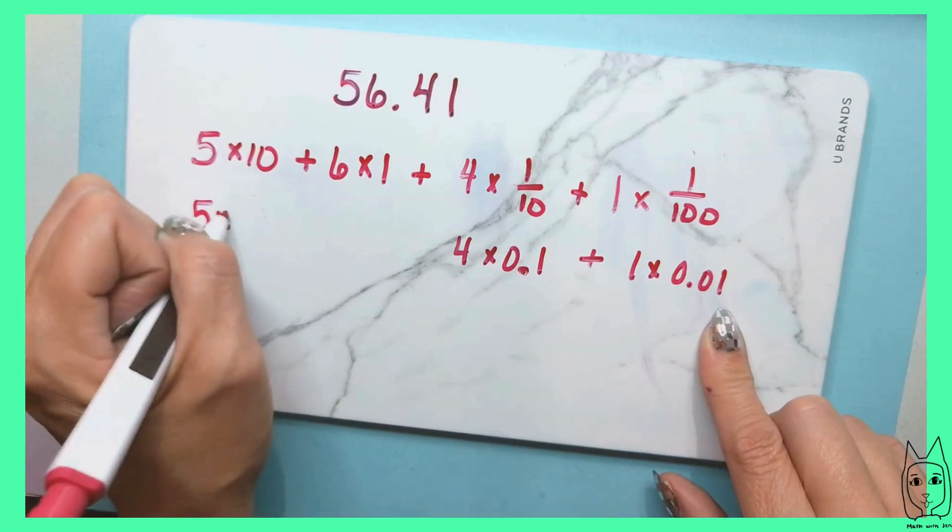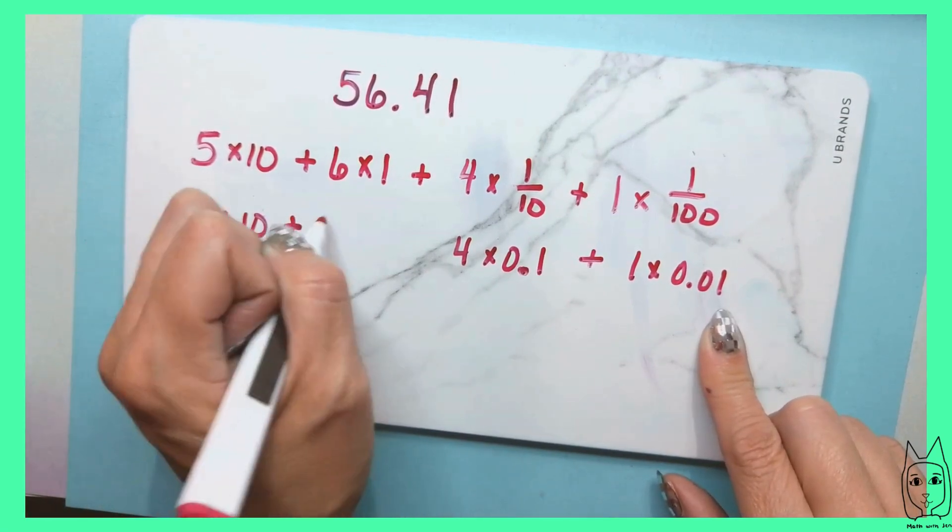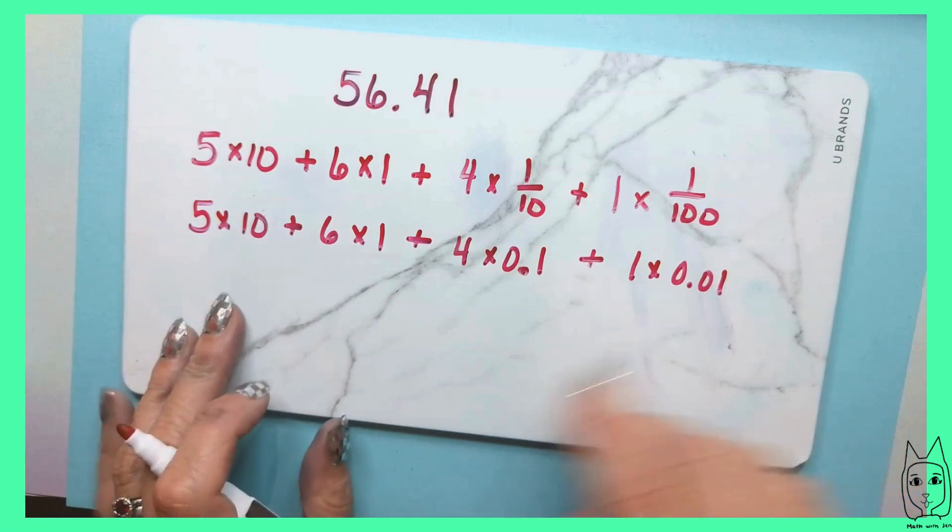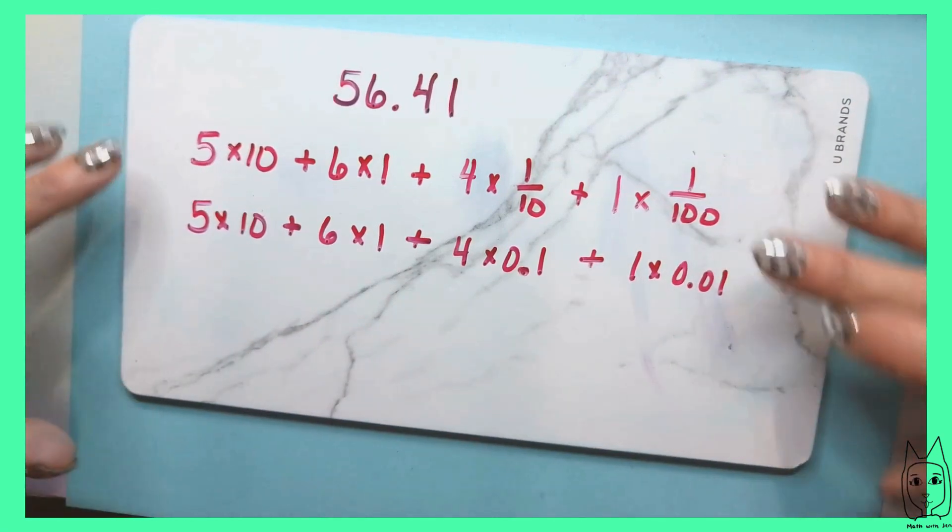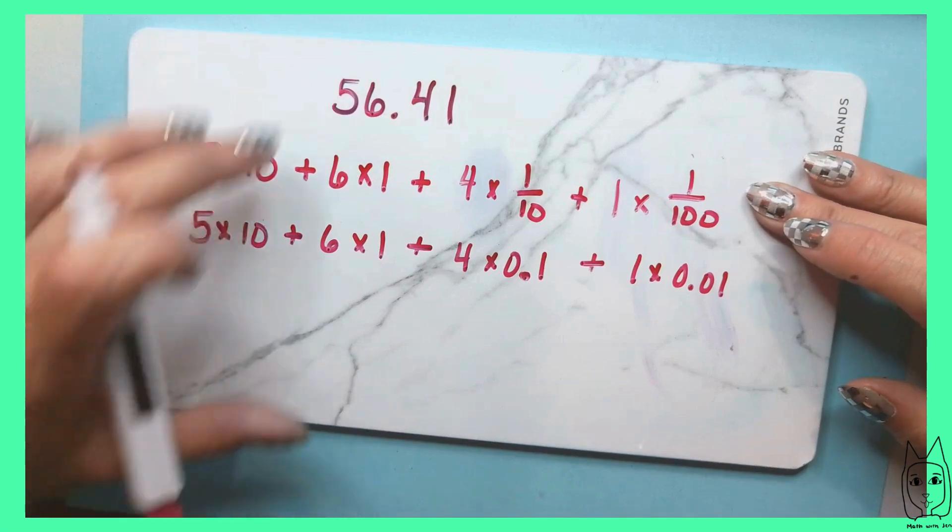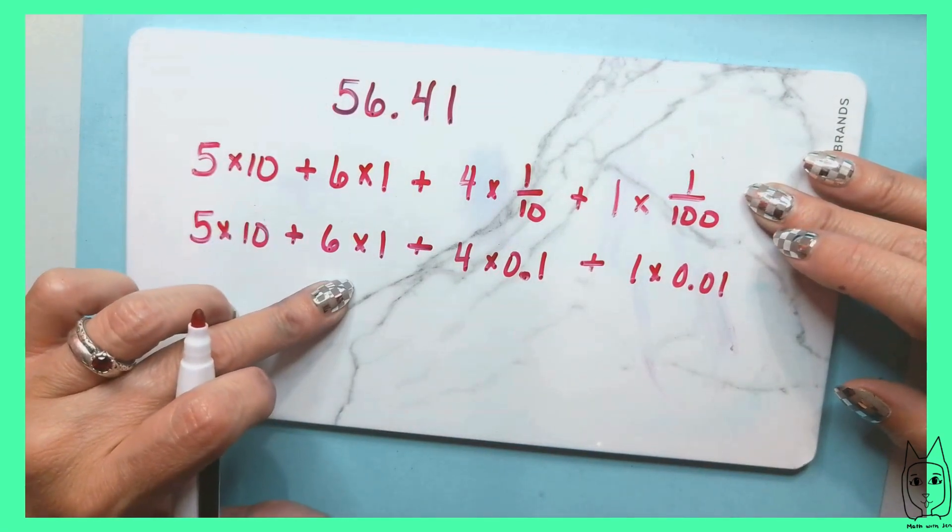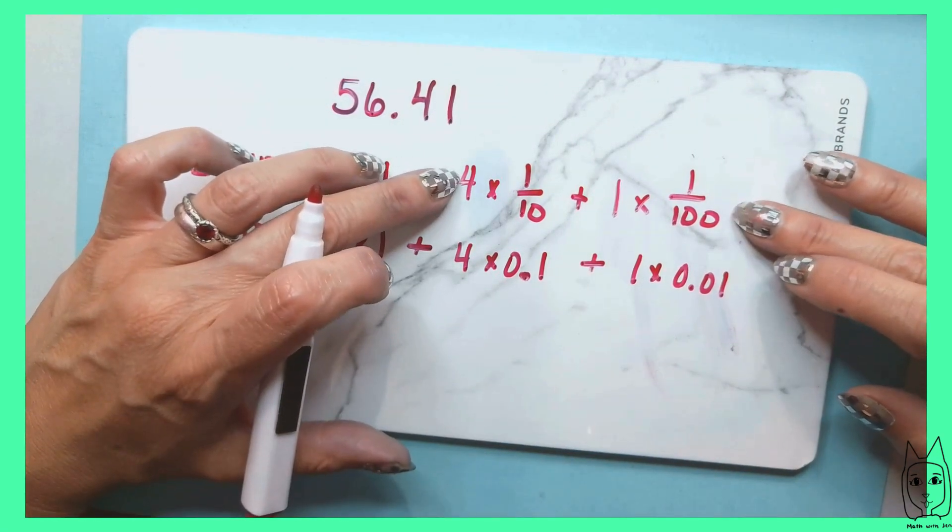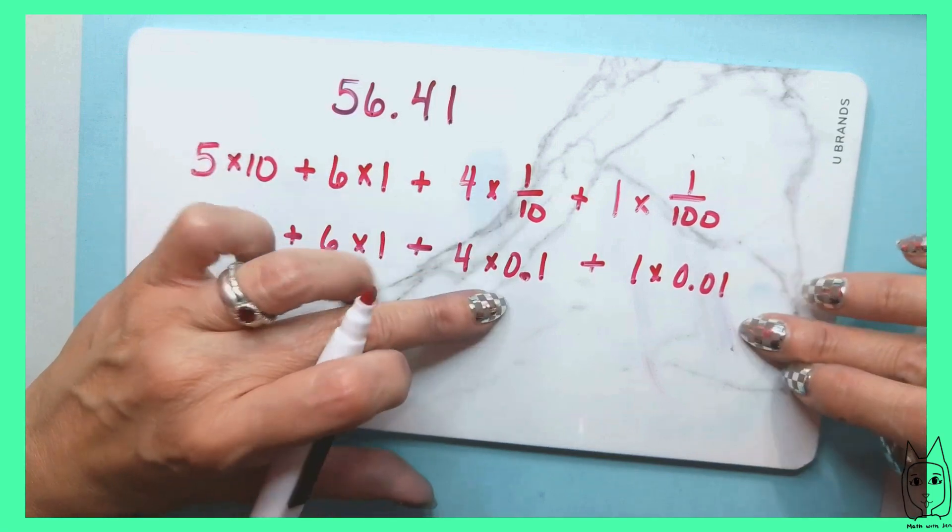So you could write it in two ways in expanded notation. You could either write it using fractions or you can write it using decimals. Whole numbers are going to be the same in both situations when you get to the decimal place values as fractions or decimals.